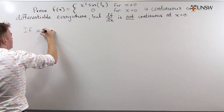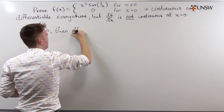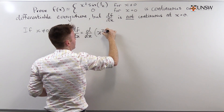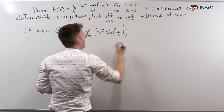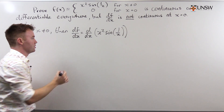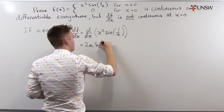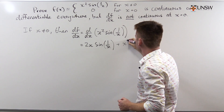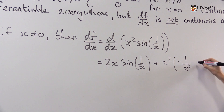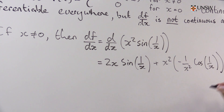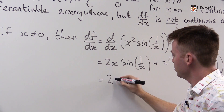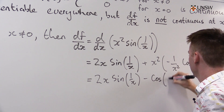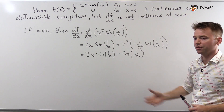If x is not equal to 0, then df/dx is equal to d/dx of x squared sine of 1 over x, which we evaluate using the product rule. That gives 2x sine of 1 over x, plus x squared times negative 1 over x squared times cos of 1 over x, which equals 2x sine of 1 over x minus cos of 1 over x. Behold, the derivative of f.